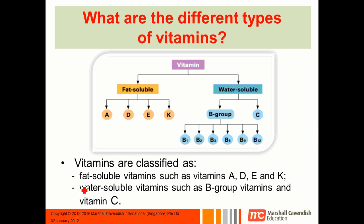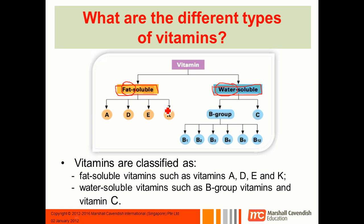So what are the different types of vitamins? Vitamins are classified into two main groups: fat soluble and water soluble vitamins. All that means is that fat soluble vitamins can dissolve in fat, and water soluble vitamins can dissolve in water. Under fat soluble you have four: A, D, E, and K.